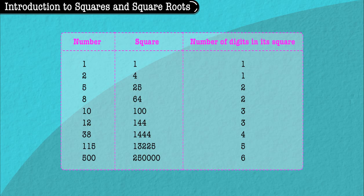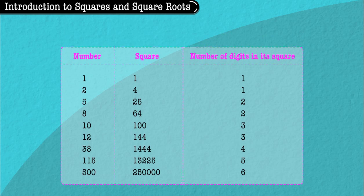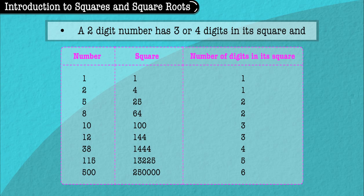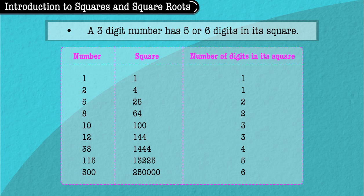From this table, we can say that a 1-digit number has 1 or 2 digits in its square. A 2-digit number has 3 or 4 digits in its square and a 3-digit number has 5 or 6 digits in its square.